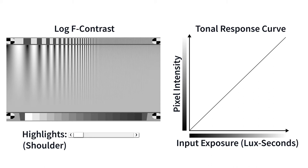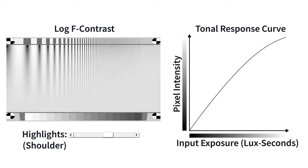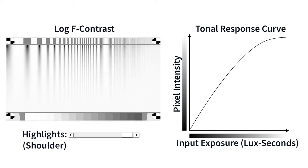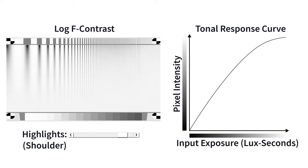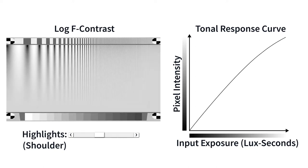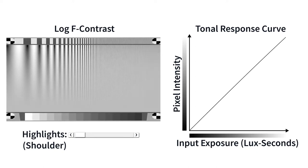Sensitivity measurements are affected by signal processing. When a shoulder is present in the tonal response curve, standard output sensitivity tends to increase while saturation sensitivity tends to decrease.